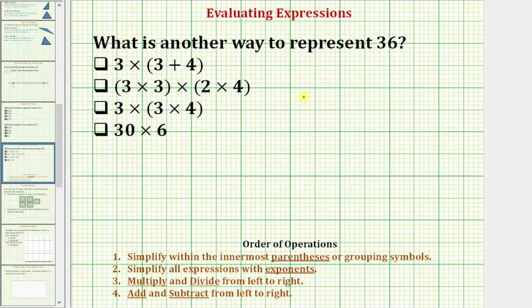The first expression we have three times, and then in parentheses, three plus four. Now following the order of operations, we want to simplify inside the parentheses first, which means we want to find this sum first. Three plus four is equal to seven, so this expression simplifies to three times seven, which equals 21. Well, 21 does not equal 36, so this first expression is not correct.